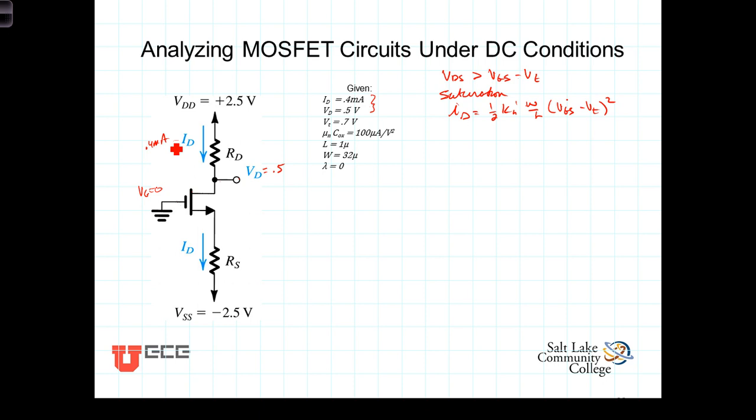Given that it's in the saturation region, we know VDD, we know V-sub-D, so we know the voltage across R-sub-D. And we also know the current that's got to be flowing through that. So at this point, we can calculate R-sub-D. It's just going to be the voltage across it, which is R-sub-D, then, is going to be the voltage across, which is 2.5 volts minus 0.5, the voltage at the drain, divided by 0.4 times 10 to the minus third. And that gives us an R-sub-D equal to 5 kiloohms.